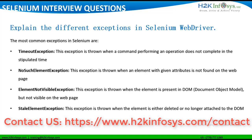Getting an exception in an automation test script or automation code is very common. Exceptions are events due to which a test script or your code ends abruptly without giving an expected output. In Selenium, you can find multiple exceptions. The list of exceptions is also available in Selenium documentation on their official website. Here we have listed down the most common exceptions in Selenium that you will see.